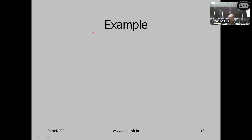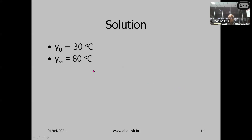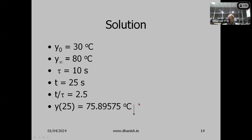We can use the error fraction formula to calculate temperature at any instant. For example, if a thermometer with a time constant of 10 seconds is kept at a room temperature of 30°C and then dipped into a fluid at 80°C, we can determine the temperature indicated after 25 seconds by substituting: y0 = 30°C, y∞ = 80°C, tau = 10 seconds, t = 25 seconds (so t/tau = 2.5).